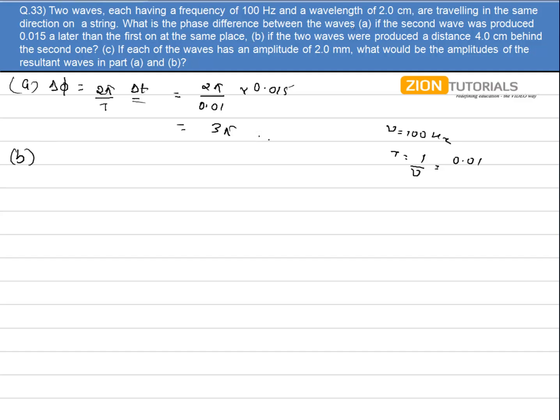In second case, if the two waves are produced at a distance of 4 cm behind the second one, I have a path difference now, so it will be 2π by λ into Δx. So it will be 2π by λ, value of λ is given as 2 cm and Δx is given as 4 cm, so it comes out to be 4π.